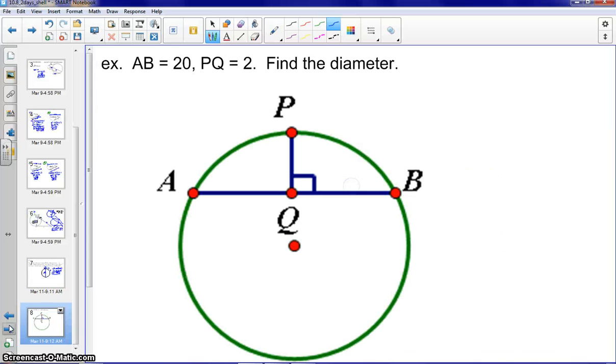And last but not least, we have a circle here with a chord, AB. AB is 20, and because we know PQ is perpendicular, we know that it is bisected, so AQ and QB are 10. PQ is 2. We are looking for the diameter. Well, we might want to actually draw the diameter in the circle first.